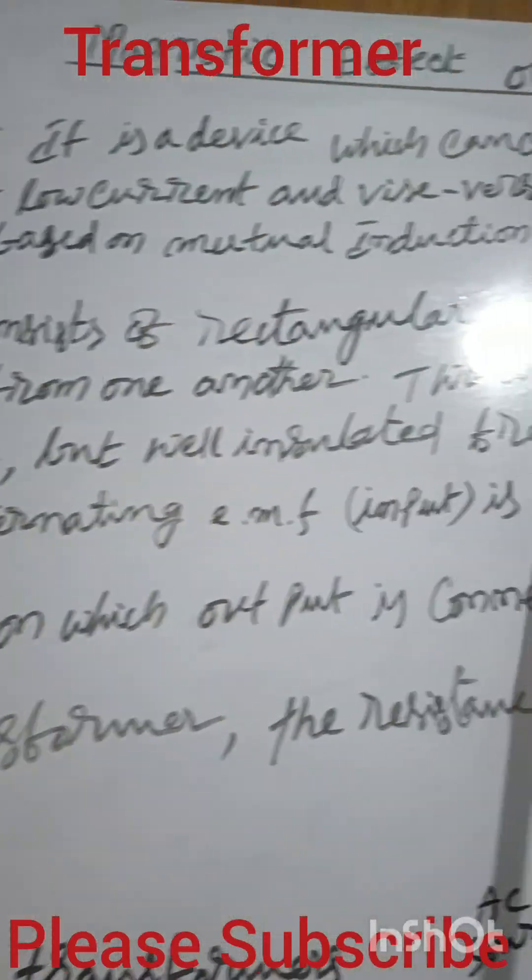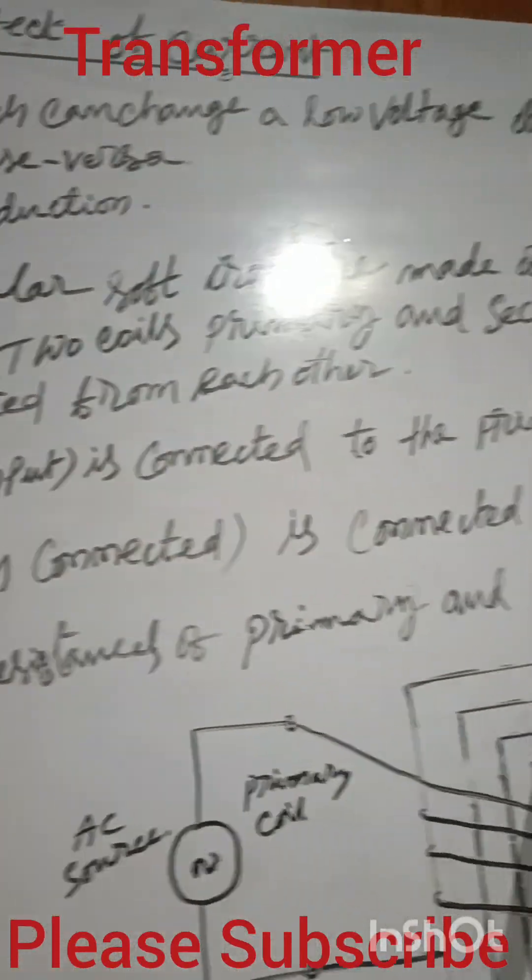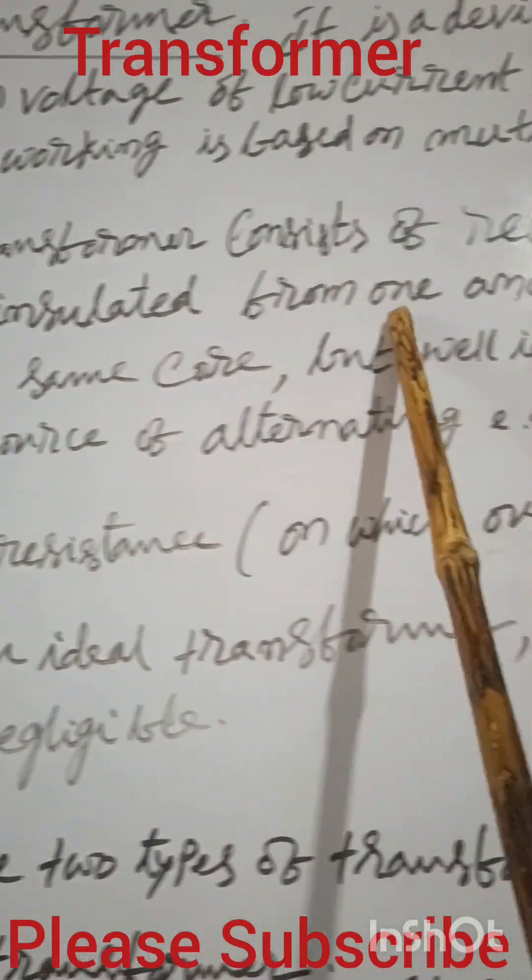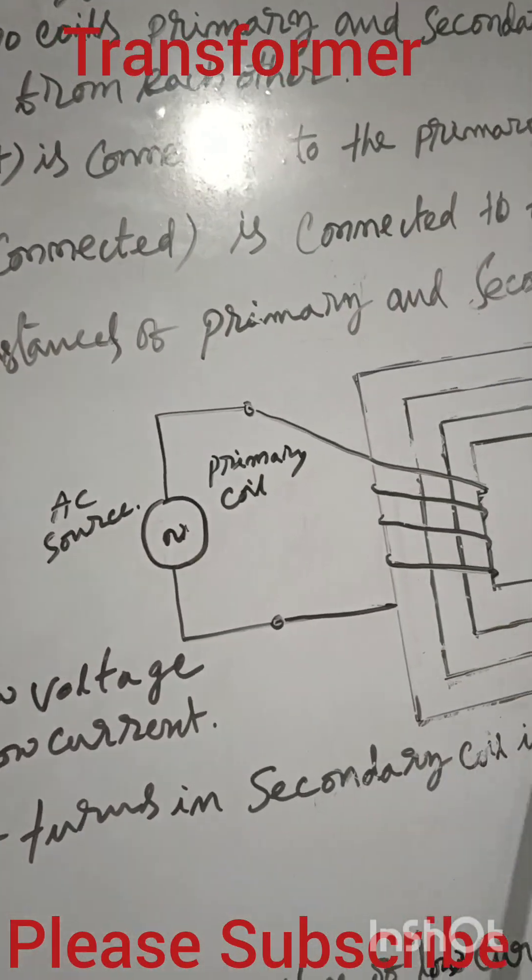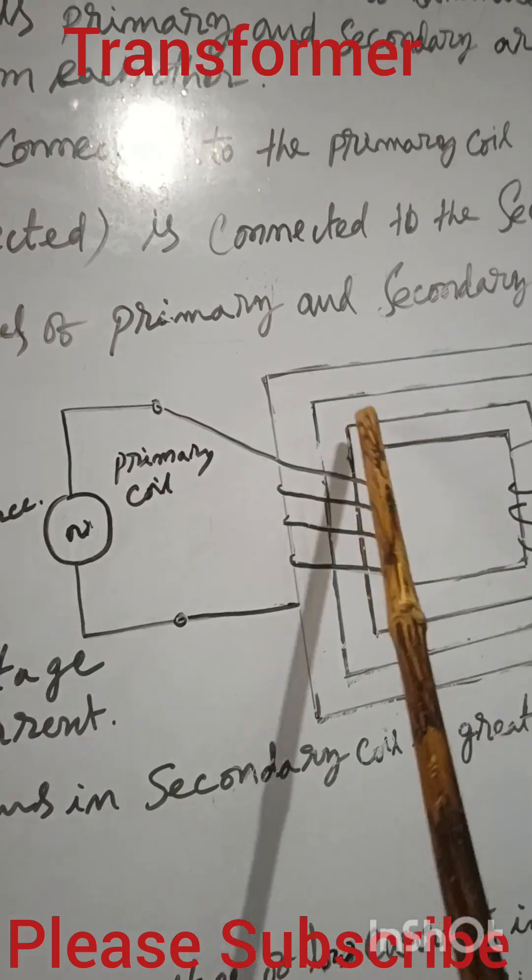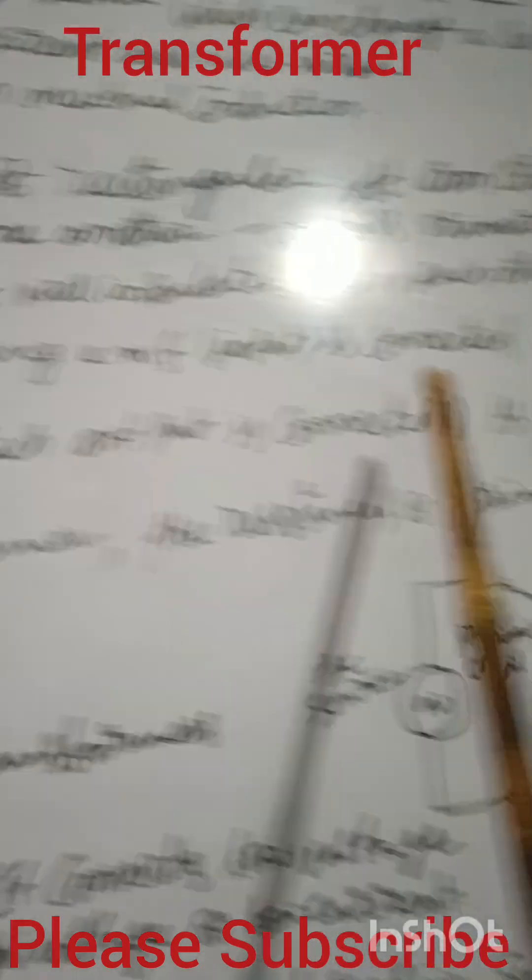A transformer consists of rectangular soft iron core made of laminated sheets, well insulated from one another. So here this is the transformer. These are laminated cores. So many core plates are there but they don't touch because they are laminated to each other.